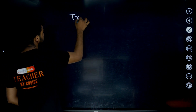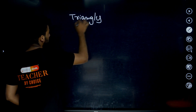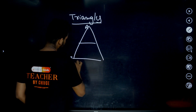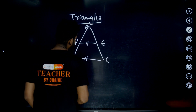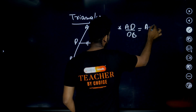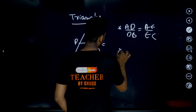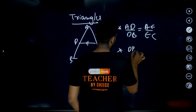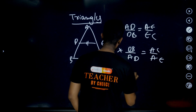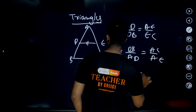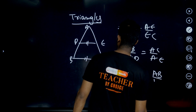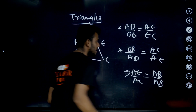Next, triangles. For the Basic Proportionality Theorem: if DE is parallel to BC, then AD/DB = AE/EC. The reverse form gives DB/AD = EC/AE. Adding one to both sides gives AB/AD = AC/AE. These three forms are very important.